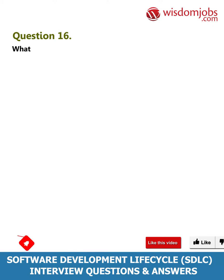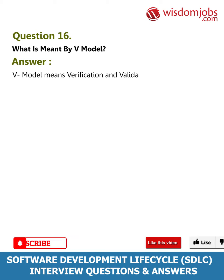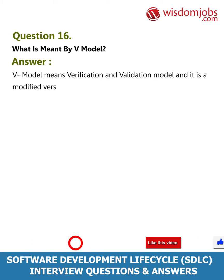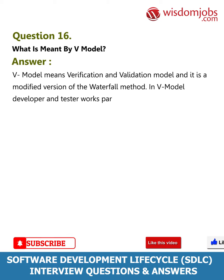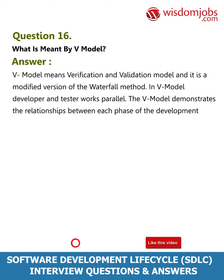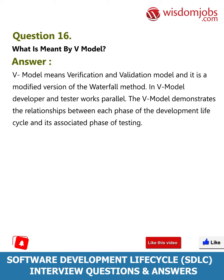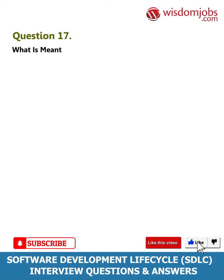Question 16: What is meant by V model? Answer: V model means Verification and Validation model, and it is a modified version of the waterfall method. In the V model, developer and tester work in parallel. The V model demonstrates the relationships between each phase of the development life cycle and its associated phase of testing.